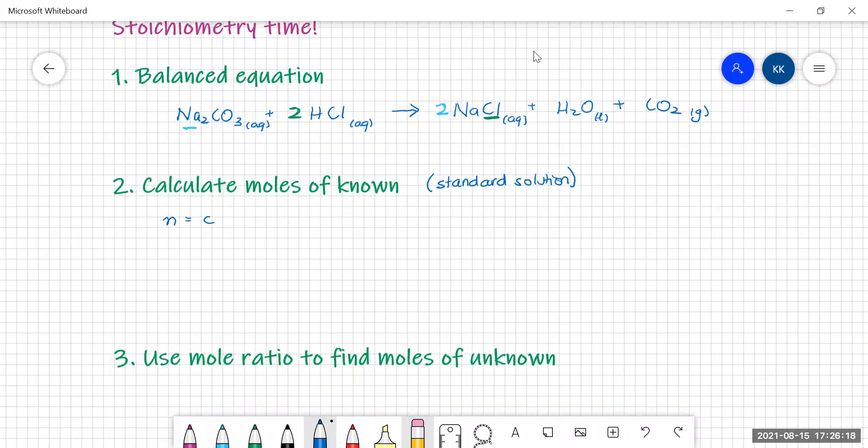So the moles of the standard solution, moles is equal to concentration times volume. Our concentration was 0.051 moles per litre. Our volume is 10 mils, but you must convert to litres. So our number of moles therefore is going to be 5.1 times 10 to the minus 4.